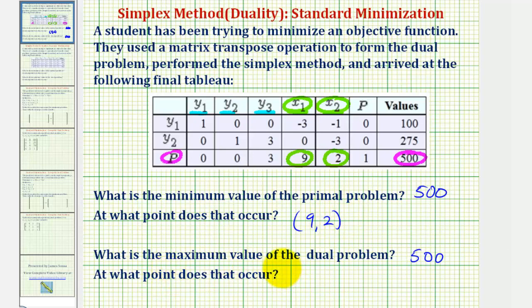To determine the maximum value of the dual problem, we'll analyze the rows associated with the active variables. Notice that y sub one and y sub two are active, while y sub three is not active. So we can determine the value of the active variables from our tableau.